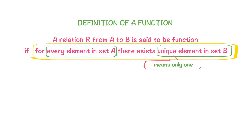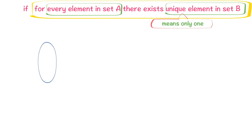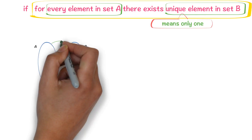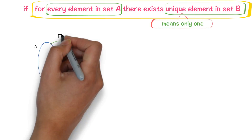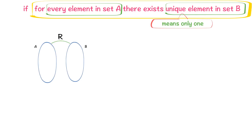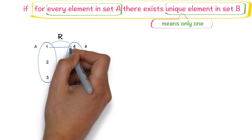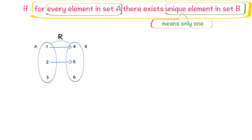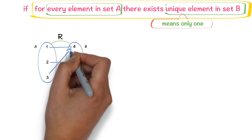I will try to explain the definition of function with the following examples. Consider a relation R from A to B. If you observe this relation R from A to B: 1 is related to 4, 2 is related to 5, 3 is related to 4.